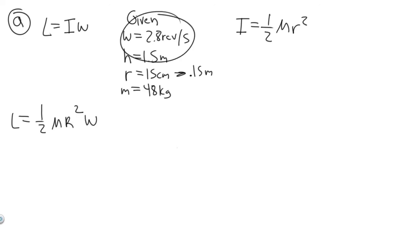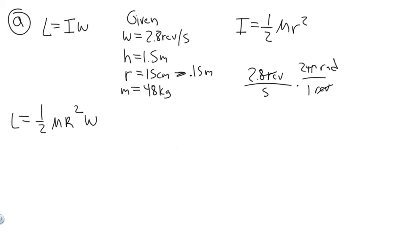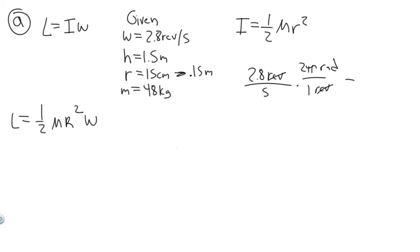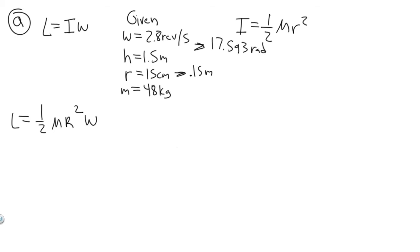When we do this, omega must be in radians per second. Right now it's in revolutions per second, so we need to convert. One revolution equals 2π radians, so multiplying by 2π cancels the revolutions. So 2.8 times 2π gives us 17.593 radians per second. That's our angular velocity.